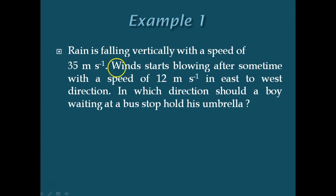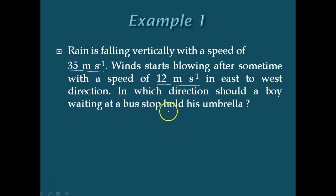The problem is: rain is falling vertically with a speed of 35 meters per second. Wind starts blowing after some time with a speed of 12 meters per second in the east to west direction. In which direction should a boy waiting at a bus stop hold his umbrella? The rain is falling vertically downwards, but the wind starts blowing with a speed of 12 meters per second in the east to west direction.